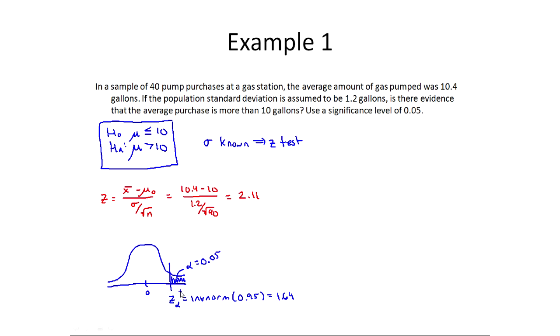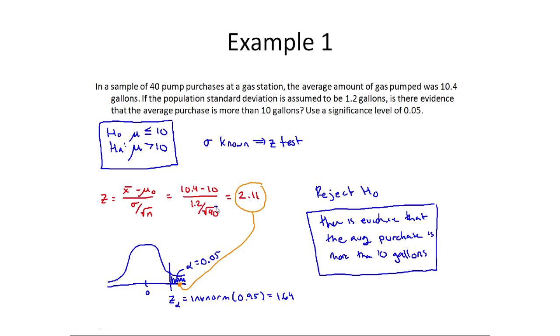Now you compare z to your cutoff. Since this is a right tailed test you're wondering if z is bigger than your cutoff, if it's in the shaded region. The inequalities you see in your textbook are always equivalent to checking if it's in the shaded region or not. I look at 2.11, well that's bigger than 1.64, that's somewhere out here which is very much in the rejection region so that means that I reject H naught. That means there is evidence that the average purchase is more than 10 gallons.